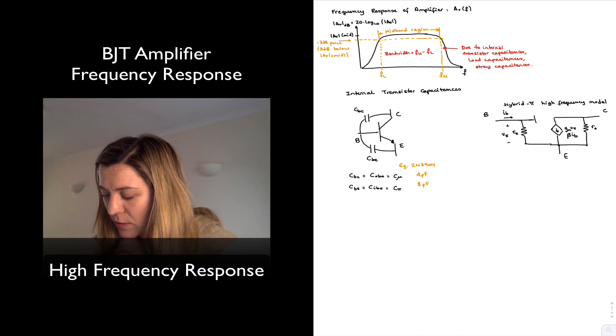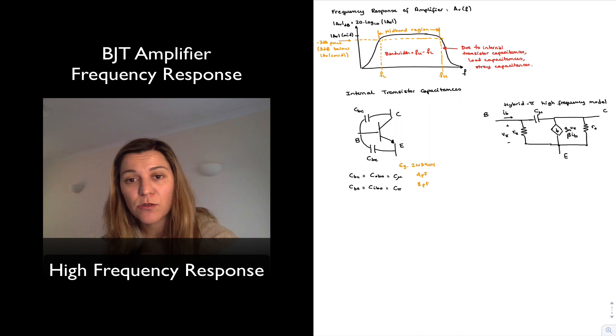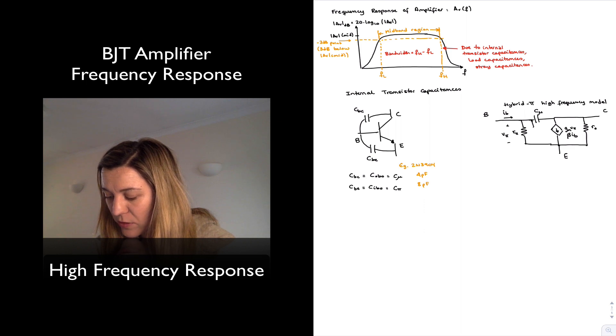Now, we just need to include those capacitances. So we see that C mu appears between base and collector. And so we can just include the capacitance C mu from base to collector, as well as C pi appearing between base and emitter. So basically in shunt with r pi.